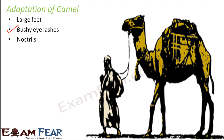The nostrils of a camel have a lining of hair which prevents sand particles from entering. Additionally, camels can fully close their nostrils to prevent sand entry.